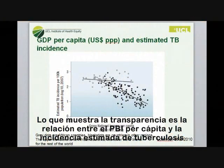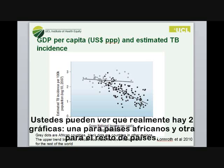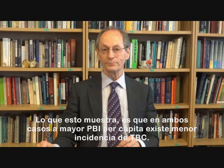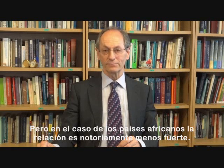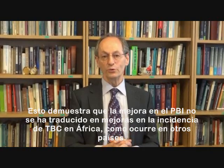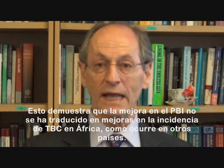This slide shows the relation between gross national income of a country and tuberculosis incidence. There are actually two graphs: one for African countries, and the other for all other countries. Although both are downward sloping — in other words, the greater the gross national income, the lower the estimated TB incidence — the relation is much shallower in Africa. It means that improved income is not being translated into improvements in tuberculosis in the same way in Africa as it is elsewhere.